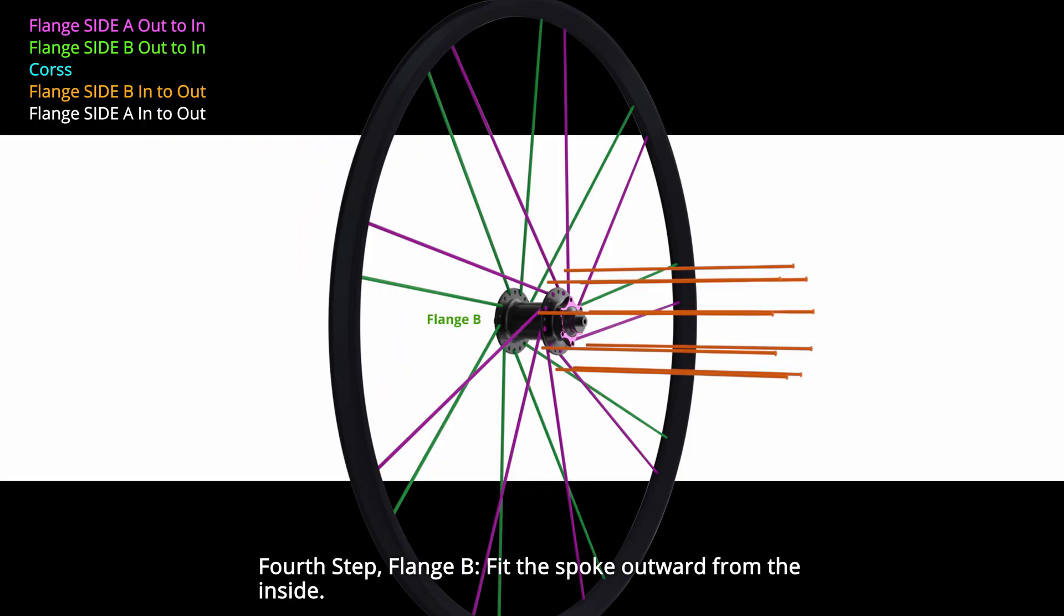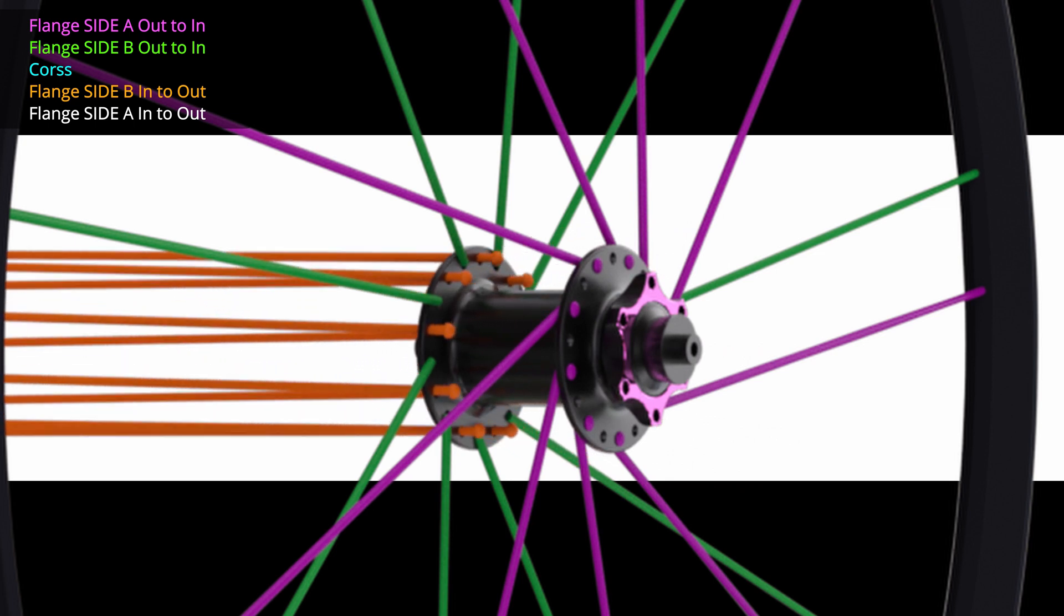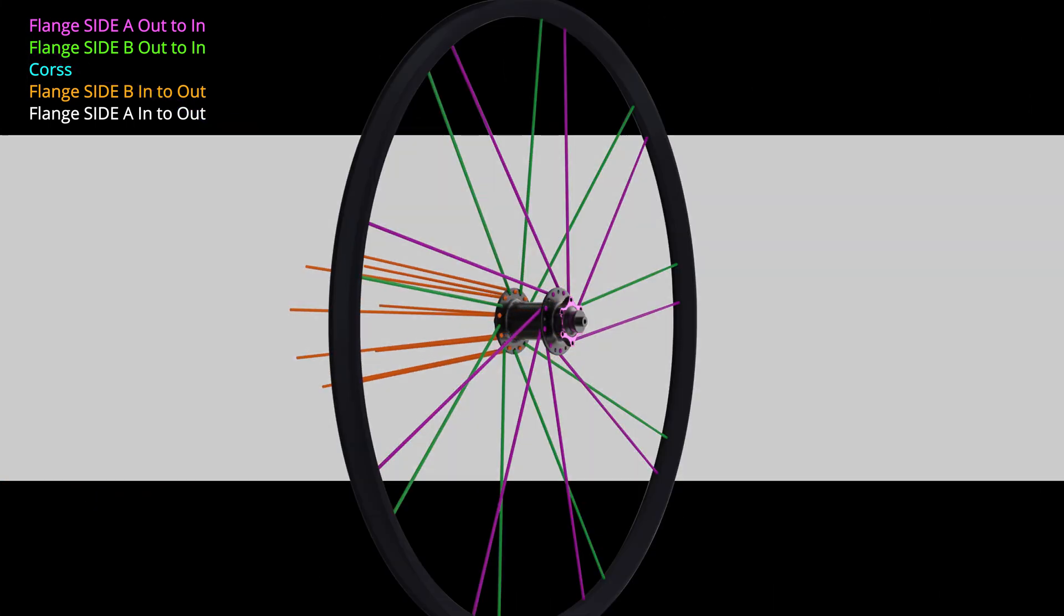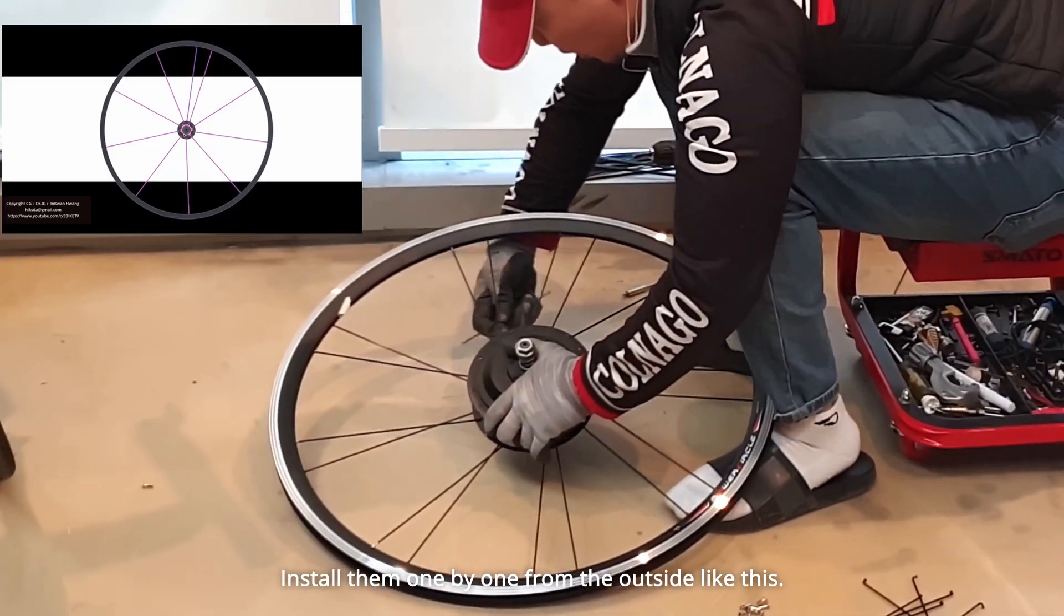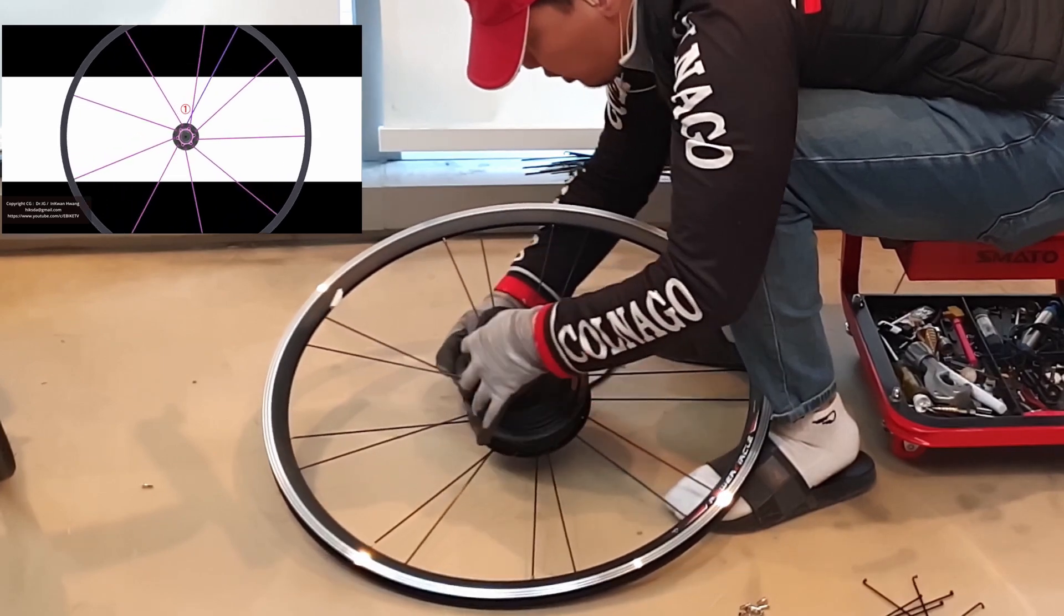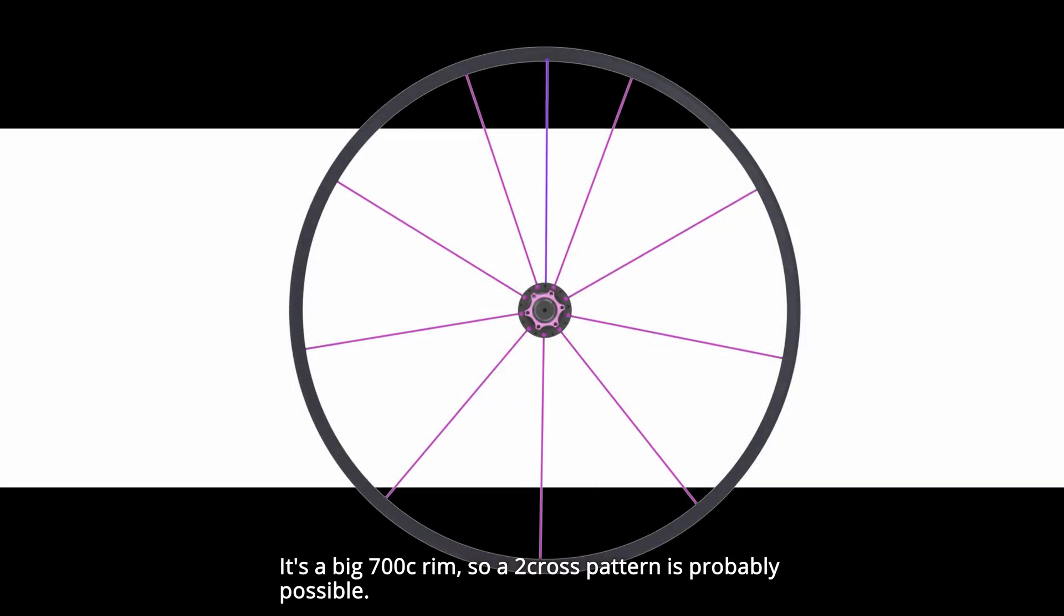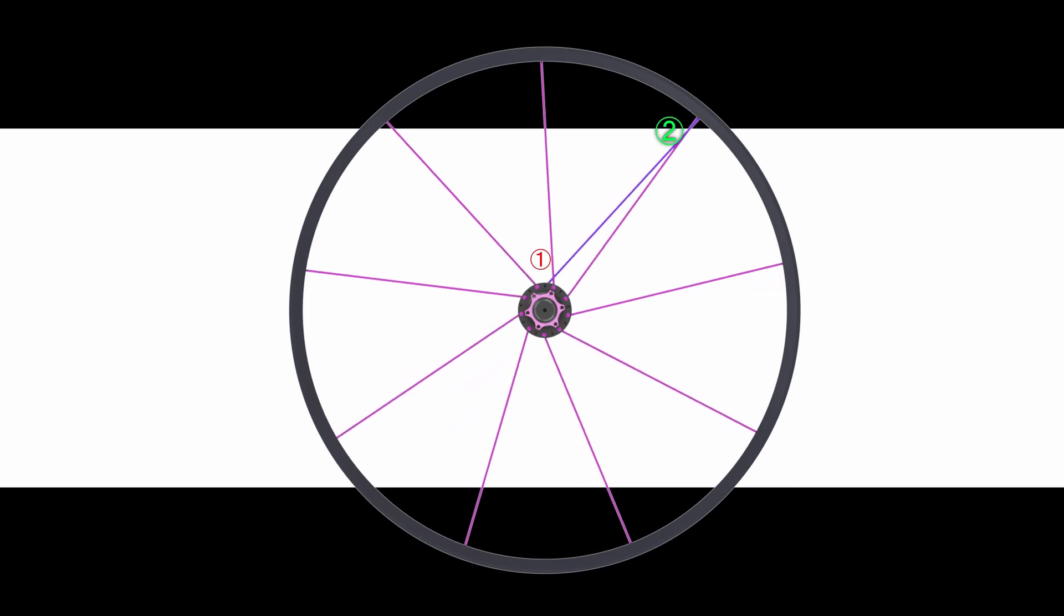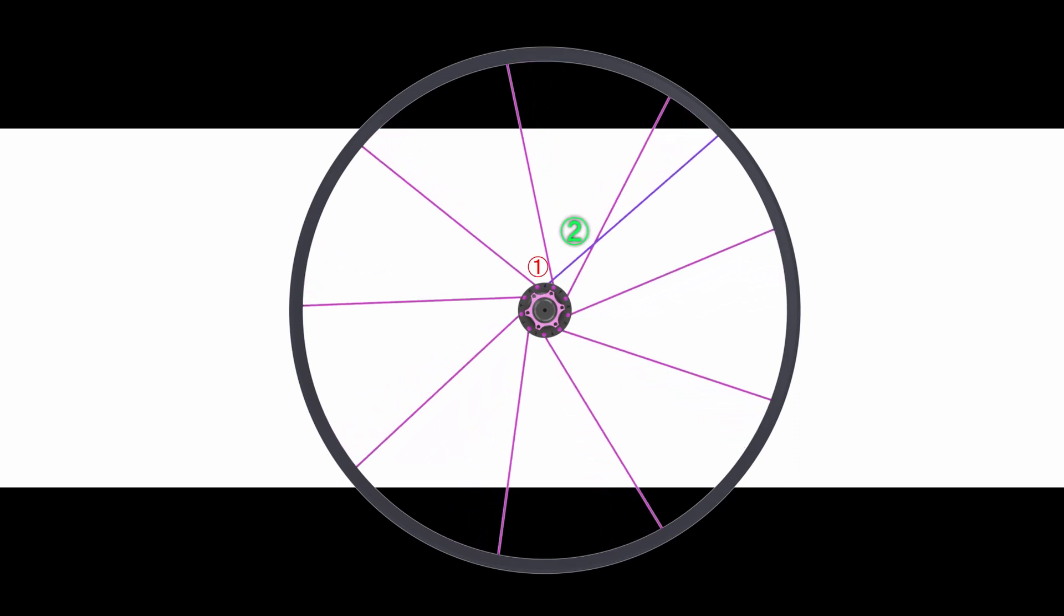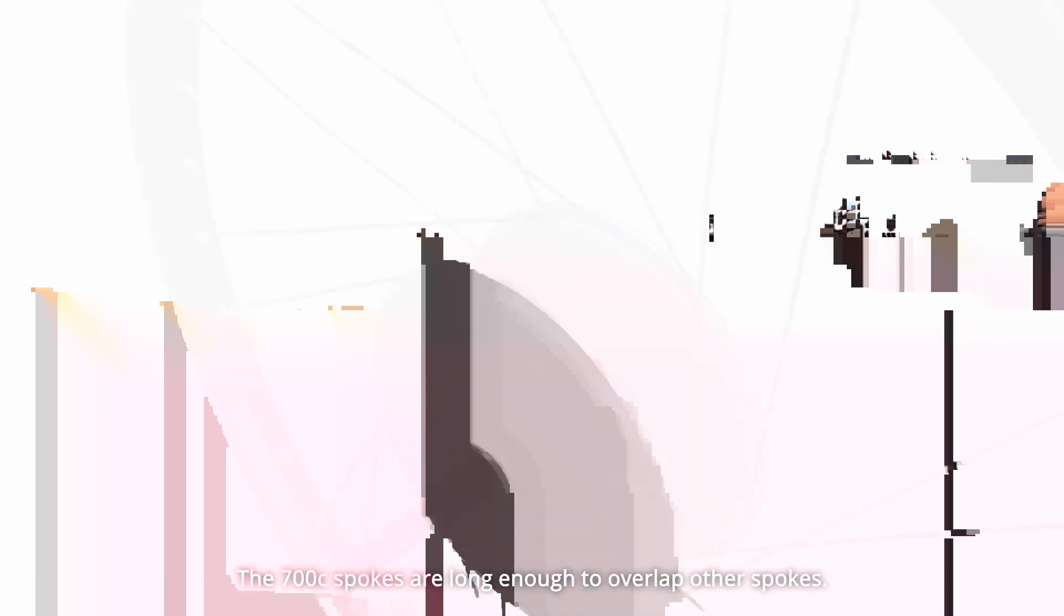Fourth step flange. Turn it slightly like this. Install them one by one from the outside like this. B. Fit the spoke outward from the inside. It's a big 700C rim. So a two cross pattern is probably possible. The 700C spokes are long enough to overlap other spokes.